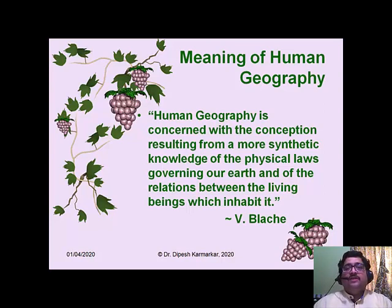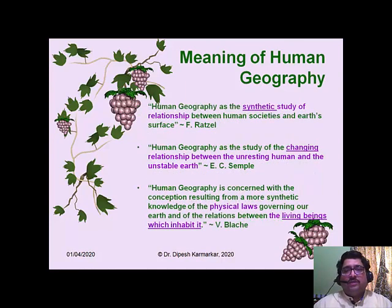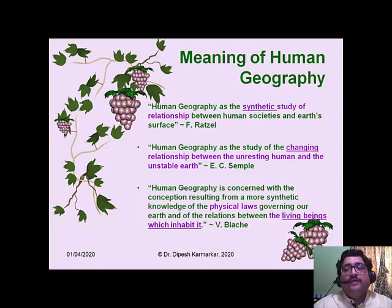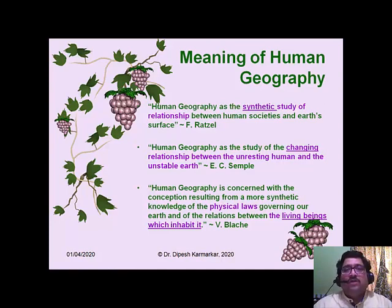These three definitions are very unique. Every definition talks about some very important quality of human geography. In the first definition of Ratzel, he highlights the synthesizing role of human geography — it underlines human geography's capacity to integrate natural and human phenomena. In the second definition of EC Semple, she highlights the aspect of changing relationship. Why is the relationship changing? Because both entities — humans are unresting while the earth is unstable — both are dynamic, so the relationship is also dynamic.